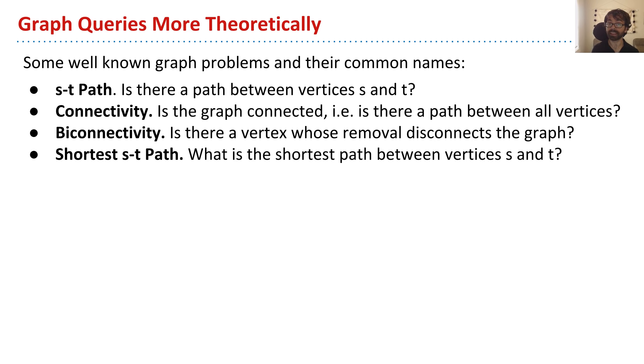The shortest s-t path problem is pretty natural. That's not only do I want to know if there exists a path, but I want to know what is the shortest path between two vertices. Cycle detection: does the graph have cycles?